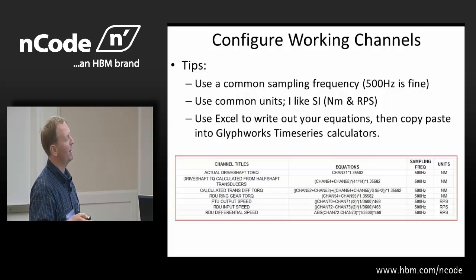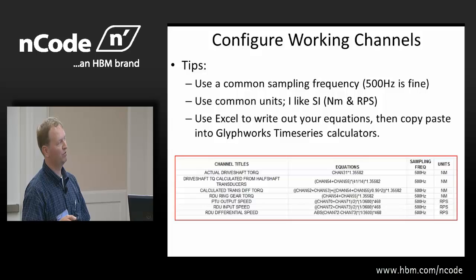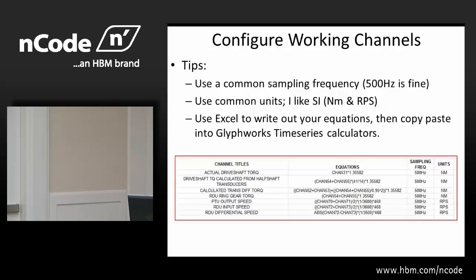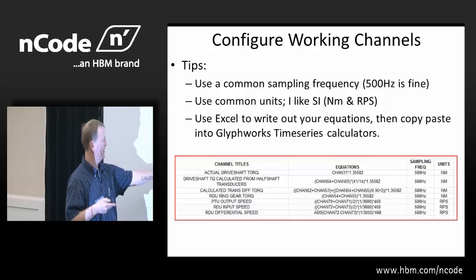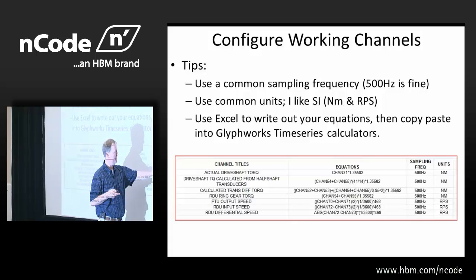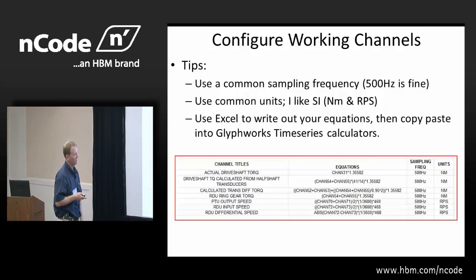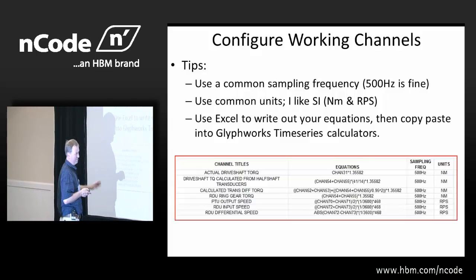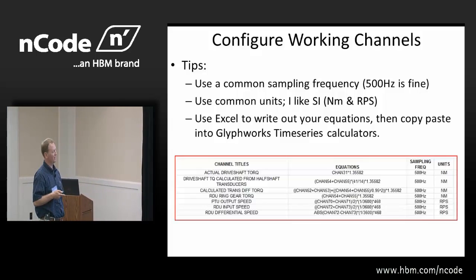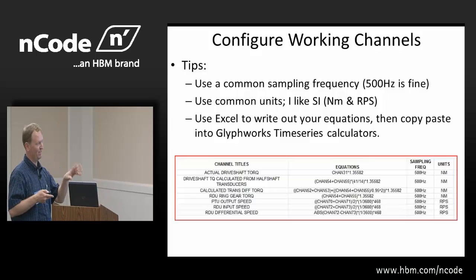Now I configure my working channels. I like to use a common sampling frequency and common units between all my work. I picked SI units — Newton meters and revolutions per second. I have my equations written in Excel. For example, my drive shaft torque is calculated from my half shaft transducers: left-hand wheel torque plus right-hand wheel torque times my axle ratio, converted to Newton meters, at 500 Hz sampling frequency. What's cool about Excel is you can copy this equation and paste it directly into Glyphworks' time series calculator, so you know your equation's right instead of having to type it in.